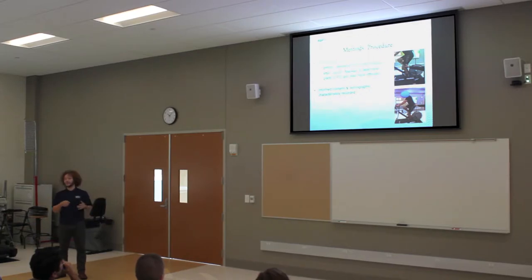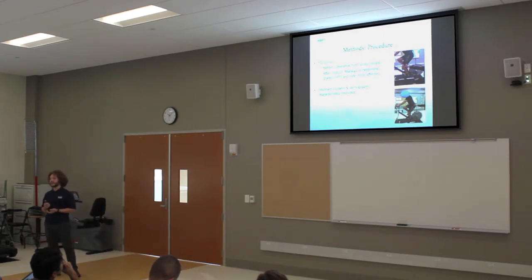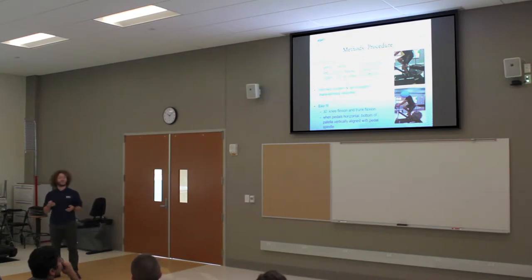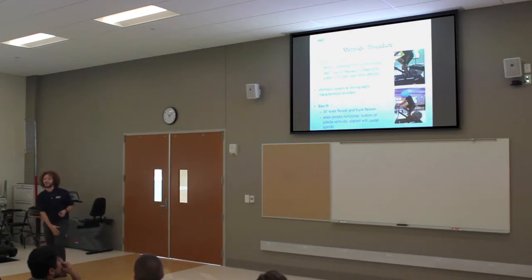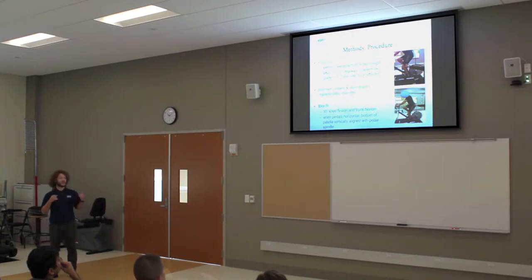From this point on, the procedure was the same for everyone. They came in, signed an informed consent, and we collected demographic information such as height and weight, cycling history, and other exercise history. We gave them specialized shoes that clip into the pedals. A bike fit was performed to normalize posture: 30 degrees of knee flexion and trunk flexion. We adjusted the seat height for knee flexion and handlebar height for trunk flexion. When the pedals were horizontal, we used a plumb line to ensure the bottom of the patella matched the pedal spindle, adjusting the bike seat fore-aft position.